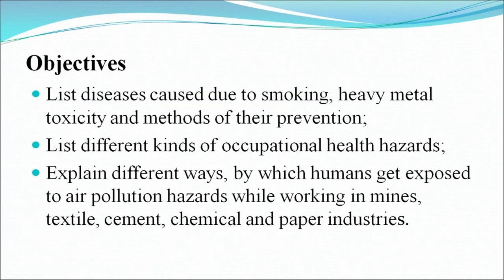We also discussed about cancer and carcinogens and their control methods. During this program, we will discuss diseases caused by smoking, heavy metal toxicity, and methods of air pollution prevention. We will also discuss different kinds of occupational health hazards while working in mines, textile, cement, chemical and paper industries. The objectives are: list diseases caused due to smoking, heavy metal toxicity and methods of air prevention; list different kinds of occupational health hazards; explain different ways by which humans get exposed to air pollution hazards while working in mines, textile, cement, chemical and paper industries.